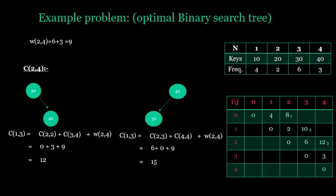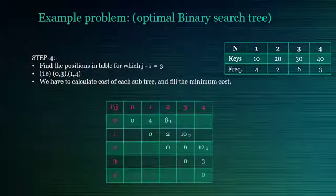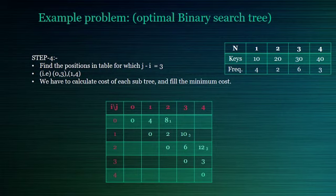For all the minimum values, their corresponding root node's number is also noted in the suffix. Step 4: Find the positions in the table for which j minus i equal to 3. That is 0,3 and 1,4. Here between 0 and 3 there are 3 nodes and between 1 and 4 there are 3 nodes.